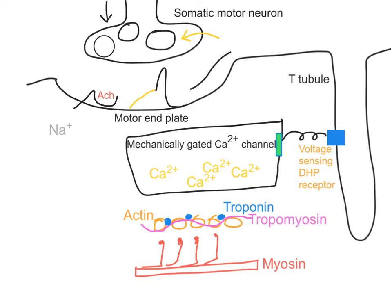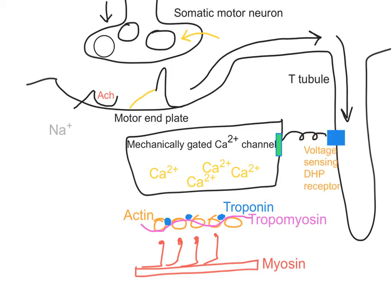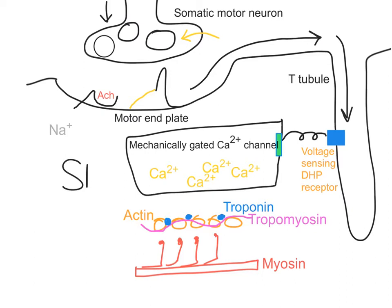This action potential would then be propagated over the surface along the sarcolemma, and then it would travel down the transverse tubules. This change in voltage is going to be detected by these voltage-sensing DHP receptors. When they change their conformation — remember these are just proteins inserted into the membrane — they are mechanically gated to the calcium channel within the sarcoplasmic reticulum. The voltage-sensing DHP receptor is mechanically linked to that calcium channel, and that channel actually opens up.